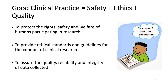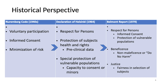We did not come up with GCP on our own — there were significant historical events which were the foundation of what is known today as GCP. In the 1940s, there was the Nuremberg Code, which was a direct result of the atrocities inflicted in the concentration camps of unethical human experimentations. The Nuremberg Code focuses on human rights of research subjects, and those three elements are voluntary participation, informed consent, and minimization of risk.